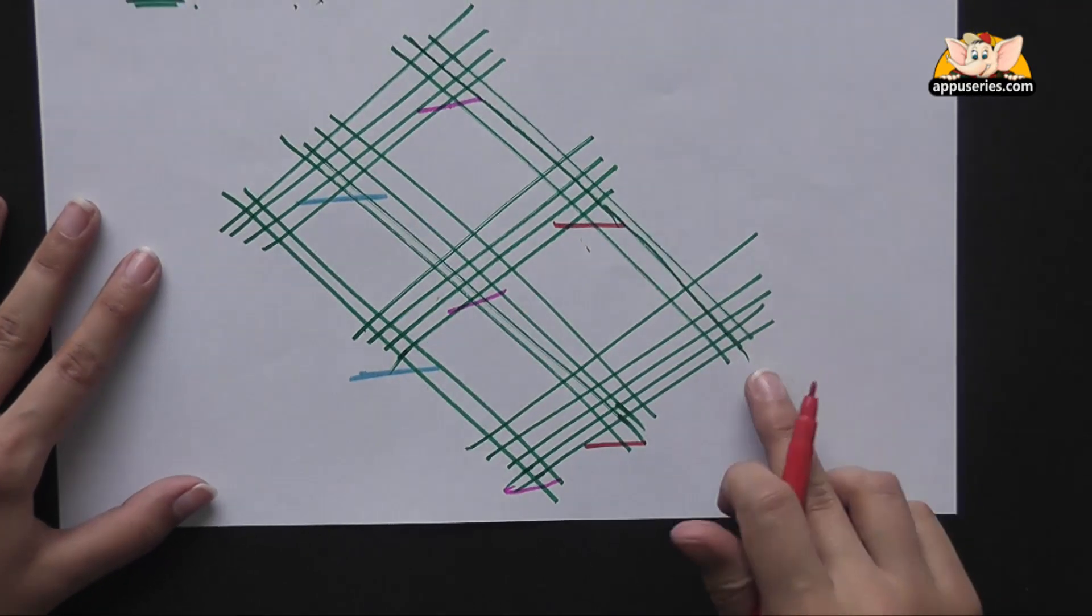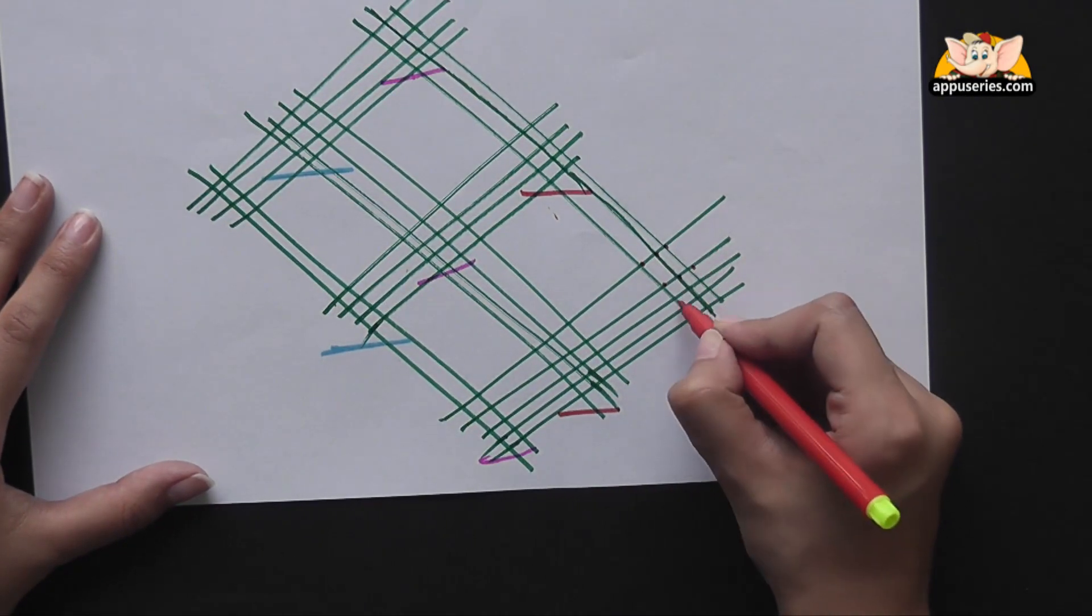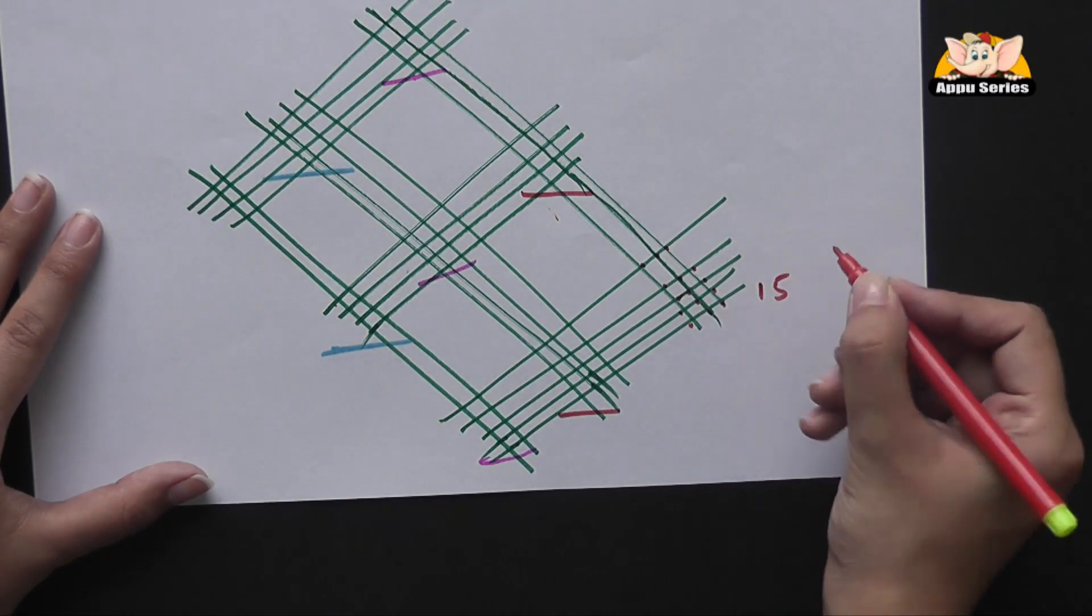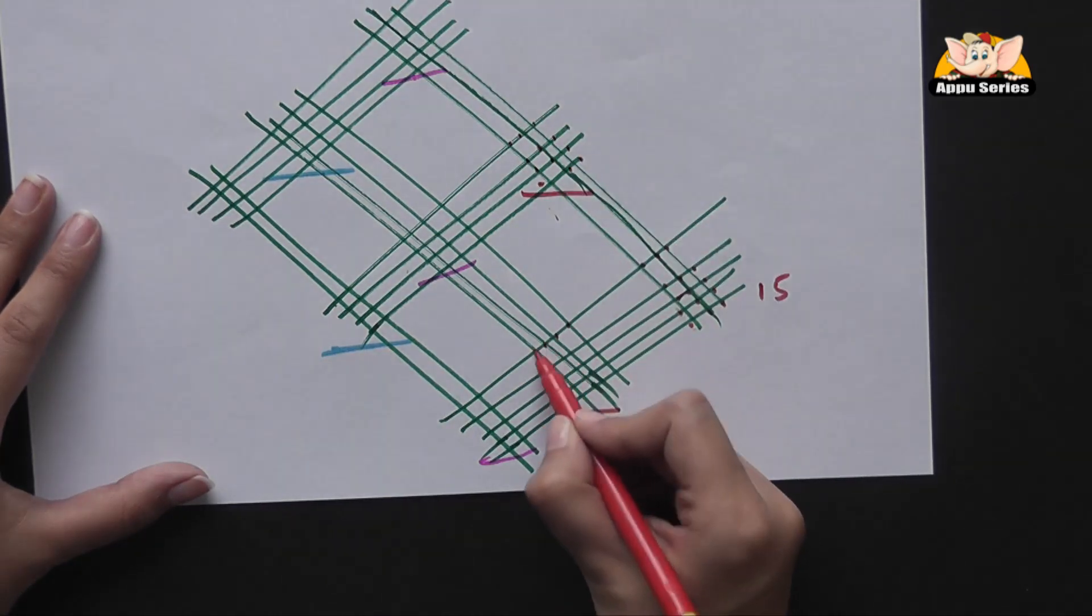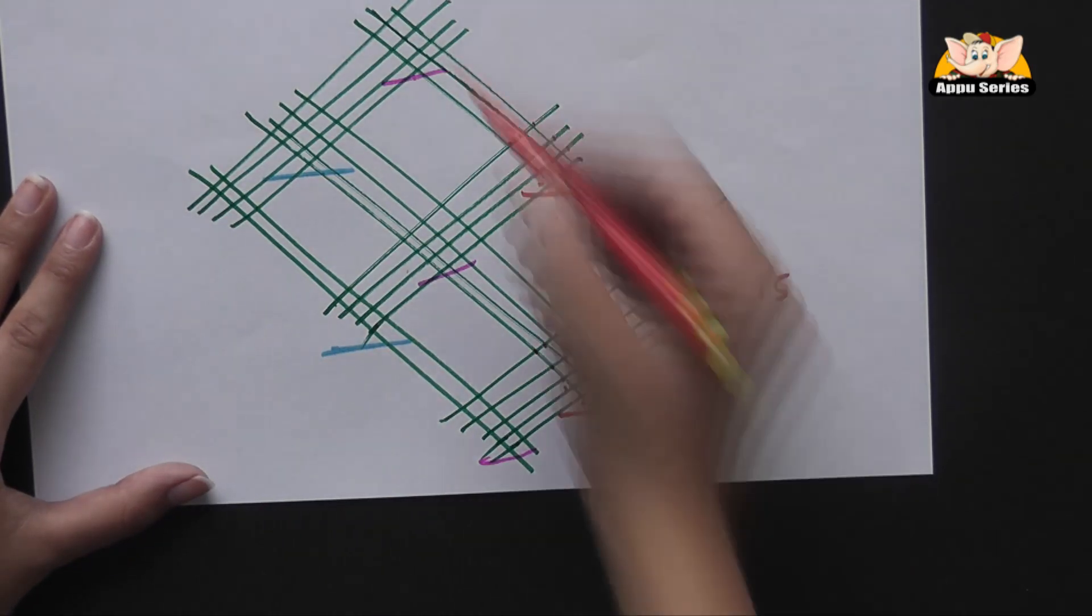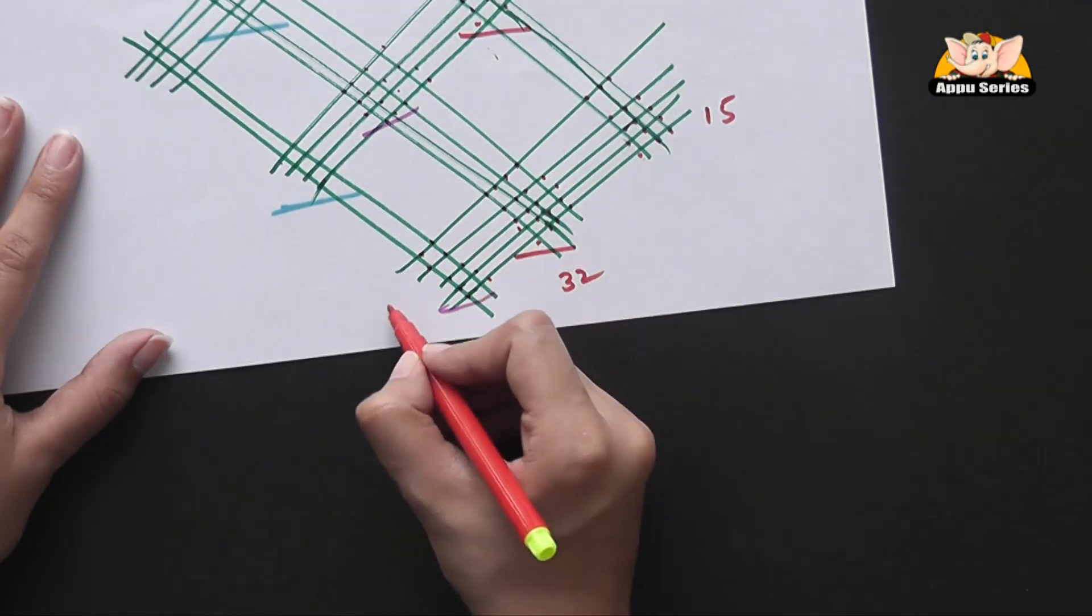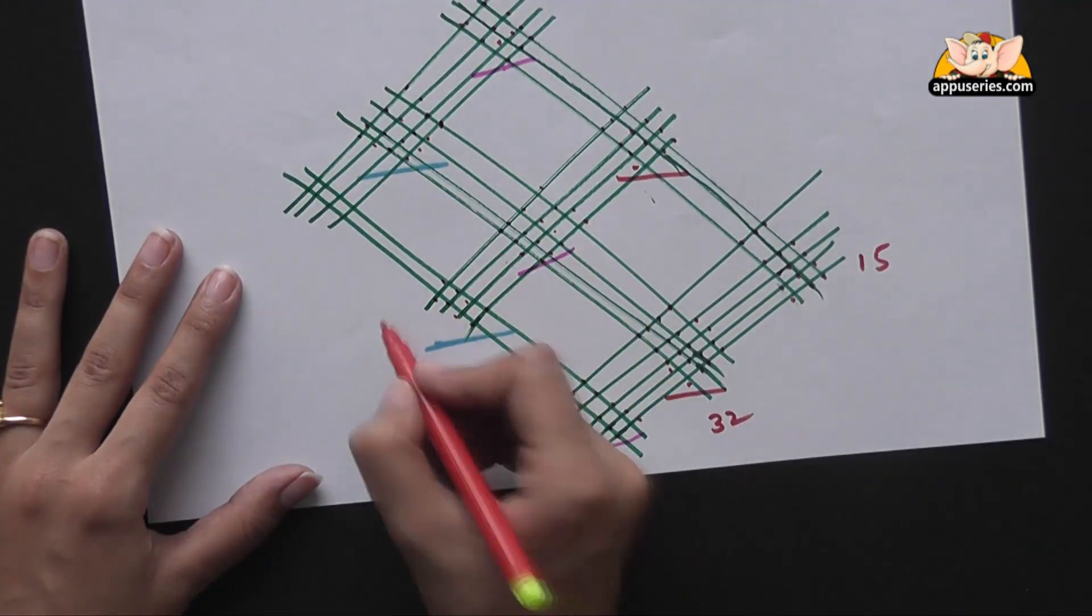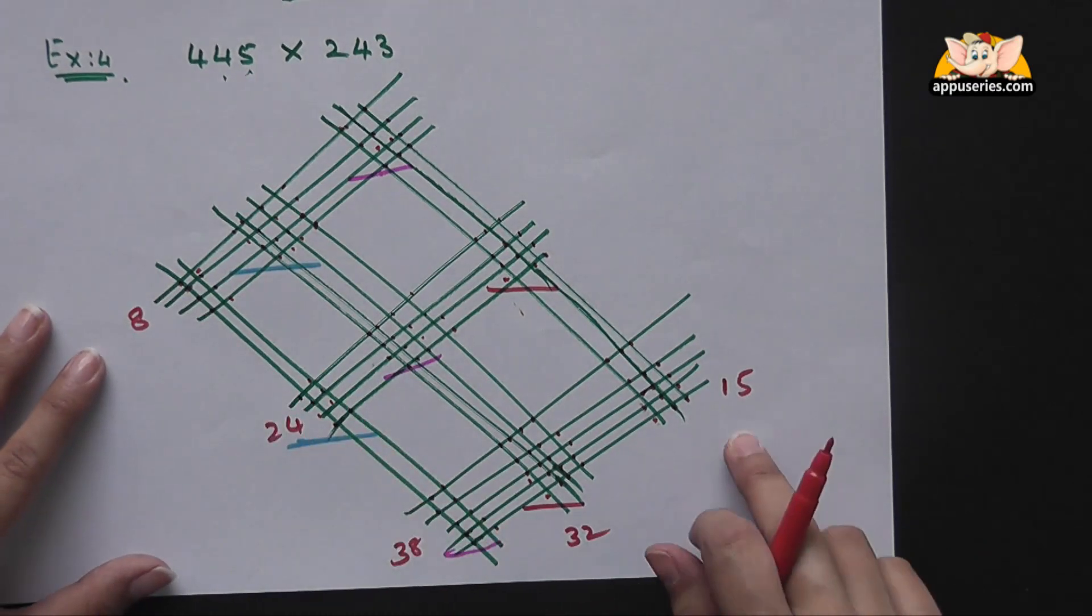So we'll start from the left. Here we have 15, here it is 32, here 38 and then here we have 24 and here it is 8. Now to calculate the answer, write down the numbers from the left.